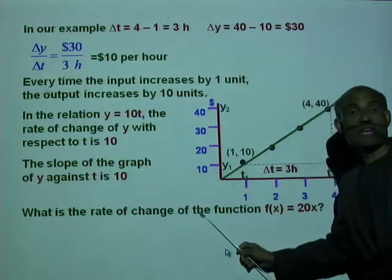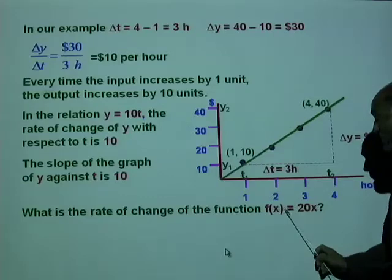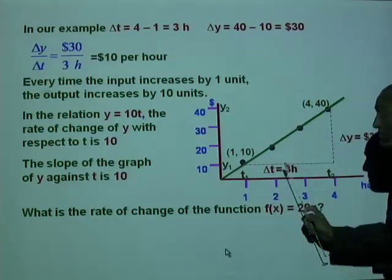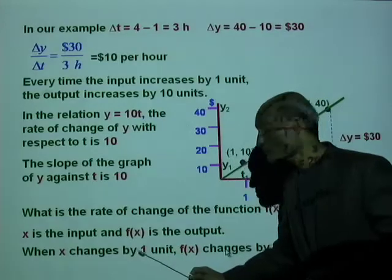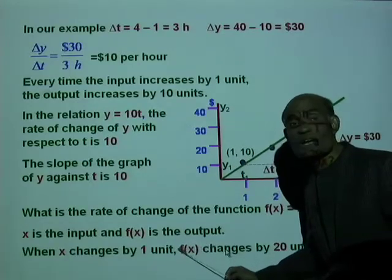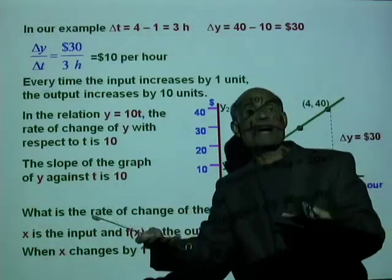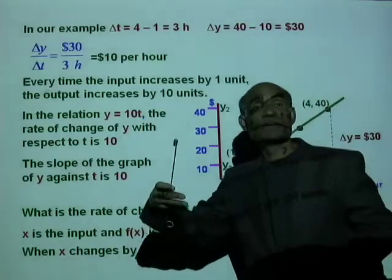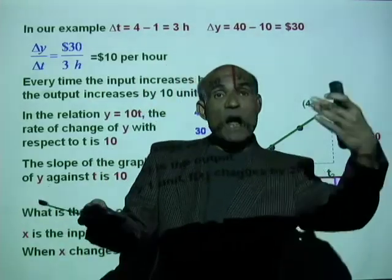What is the rate of change of the function f of x equal to 20x? The graph will go like this — every time x changes by one unit, the output changes by 20 units. Note that here I use f of x for the output, which is the same as y. We often use y as the output, but f of x, f of t, g of x, h of x — they are all representations for the output of a function.